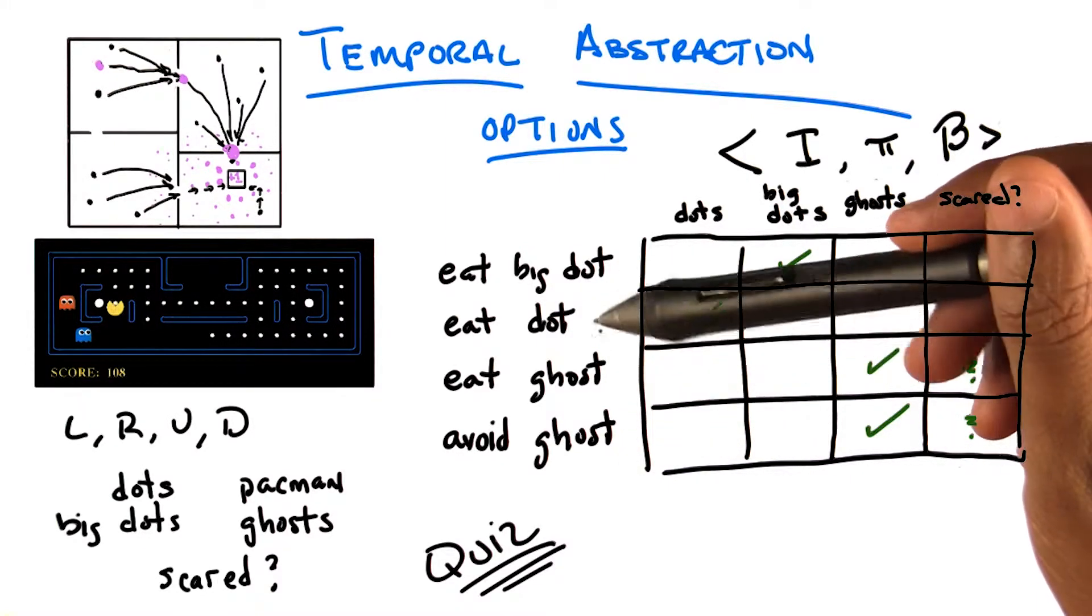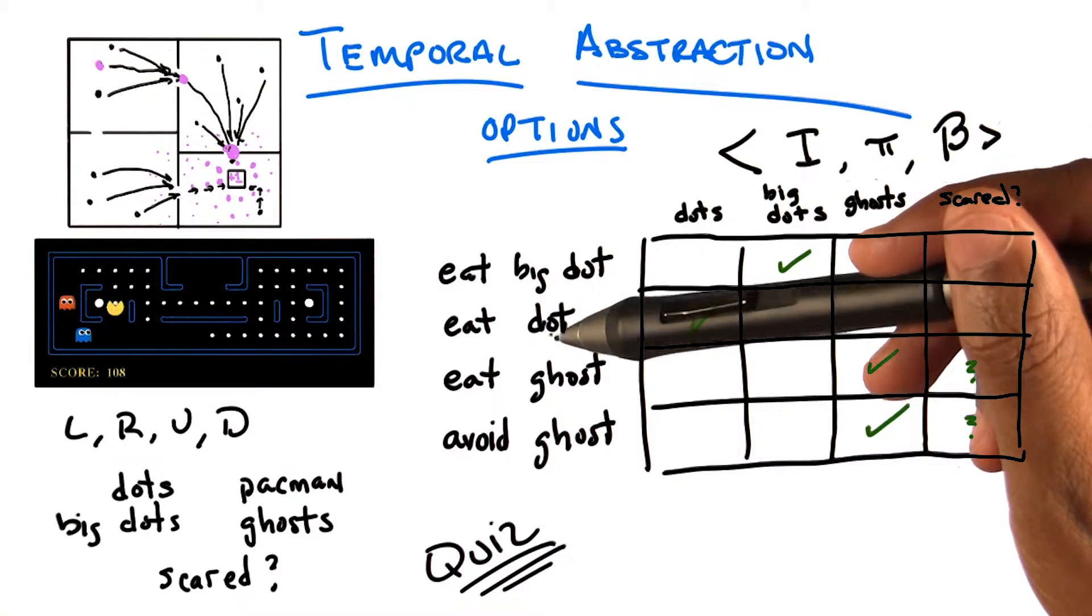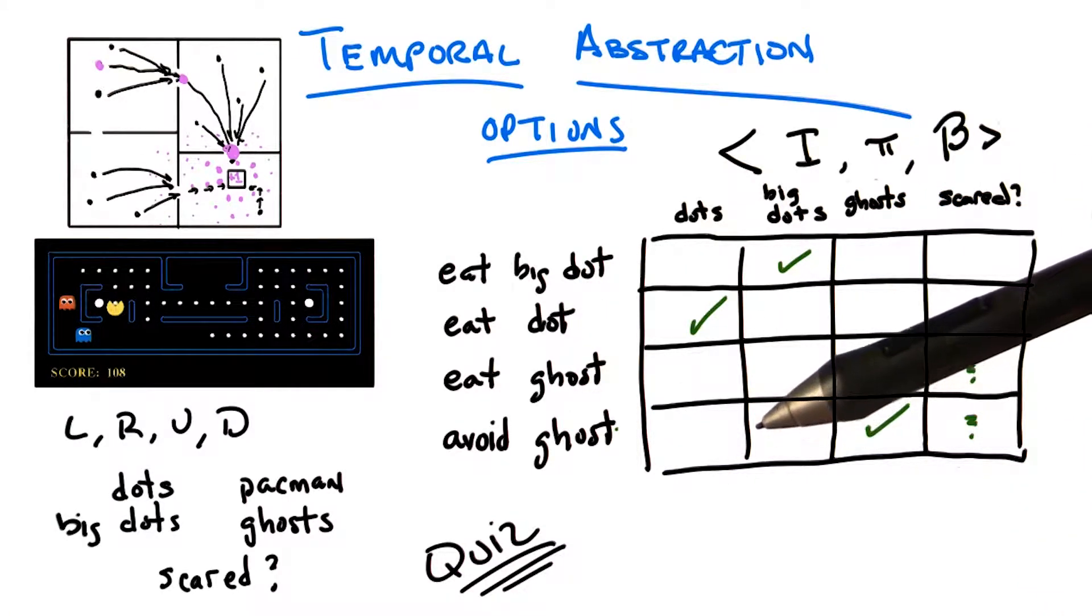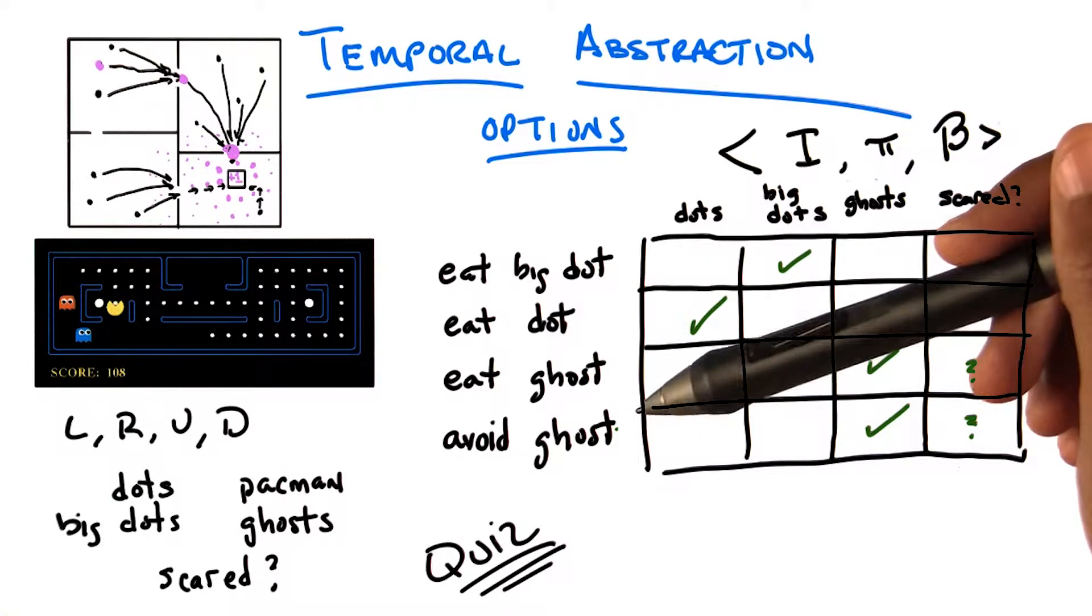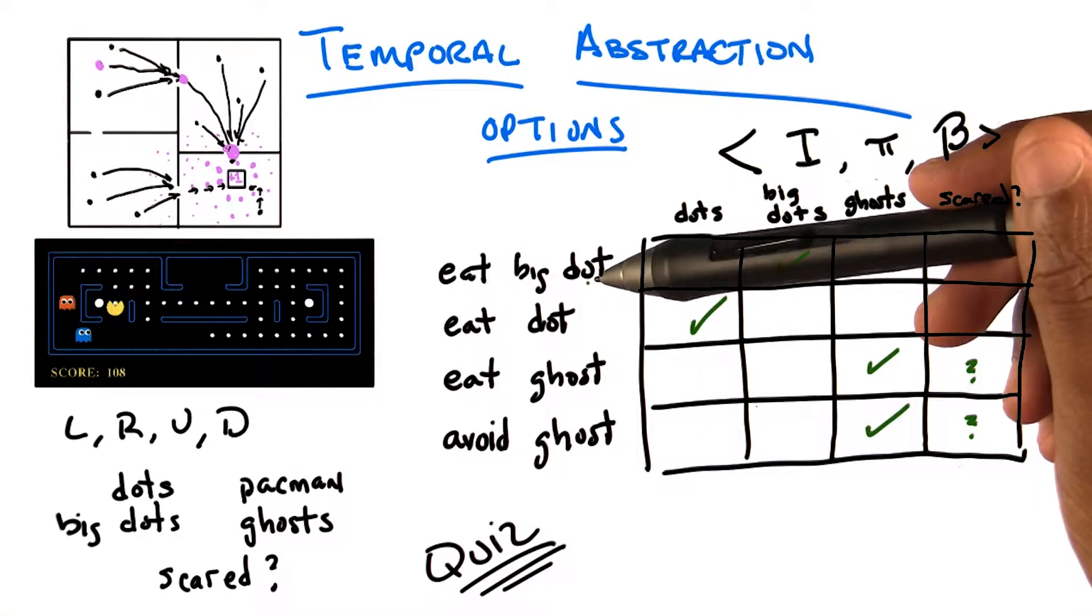But if I worry about that, then all of these options have to solve every single problem. And I kind of get nothing out of it. I don't get a big win by even thinking about it in terms of options, because effectively I'm just trying to solve the entire problem.